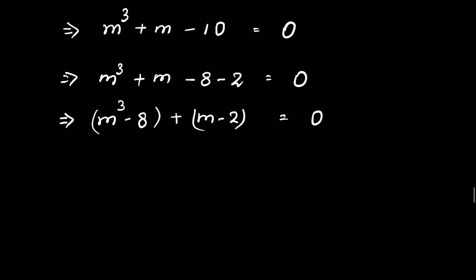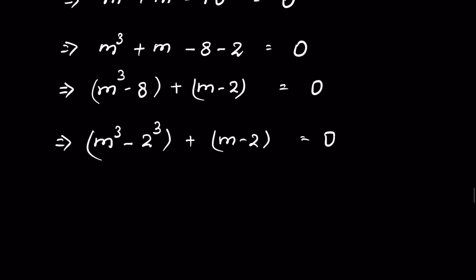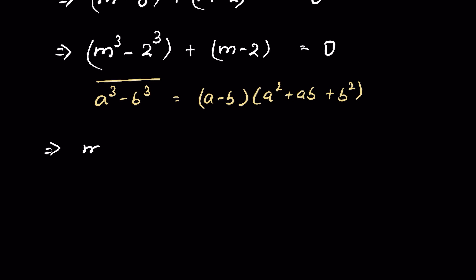So m³ minus 8 we can write as m³ minus 2 to the power 3, plus m minus 2, equals 0. Now m³ minus 8 is in the form of a³ minus b³, and this we can expand as (a minus b)(a² plus ab plus b²). So this becomes (m minus 2) times (m² plus 2m plus 2²).